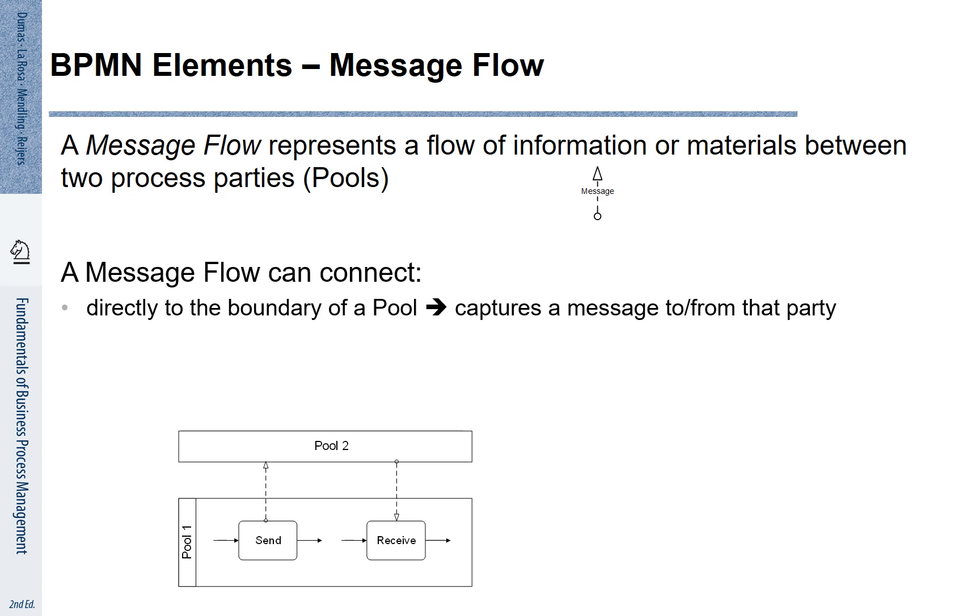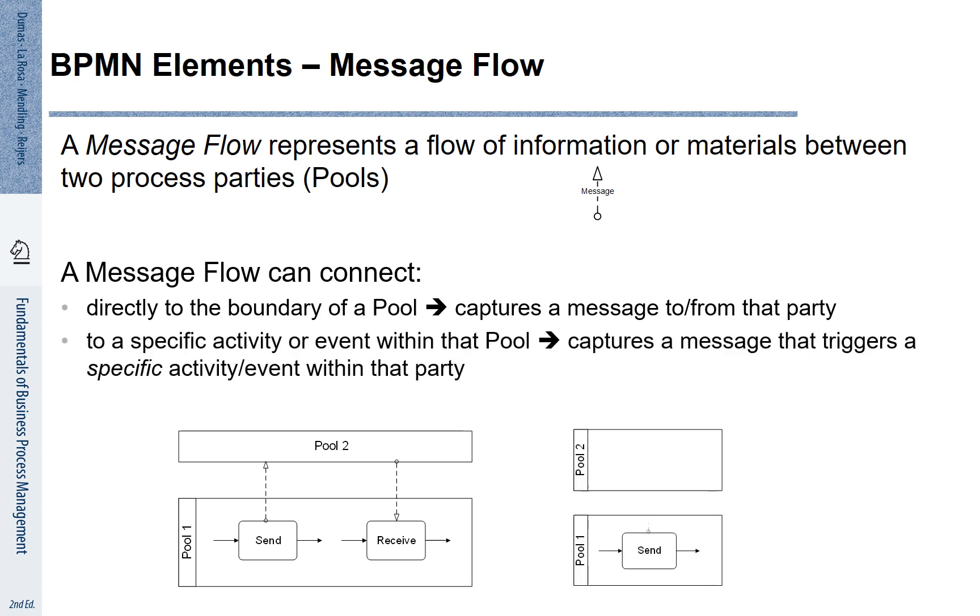You see an example here on the left-hand side bottom. There is one entity that is called pool 1. A sending activity leads to a message flow that is exchanged with pool number 2. The entity that is associated with pool 2 may reply to this. This may be also done without having a particular response later. We see here that we can represent pool number 2 in different ways. We may actually show explicitly also activities in pool number 2 when we know them.